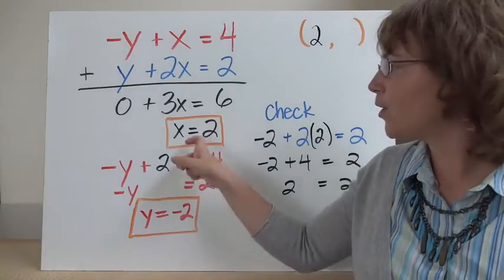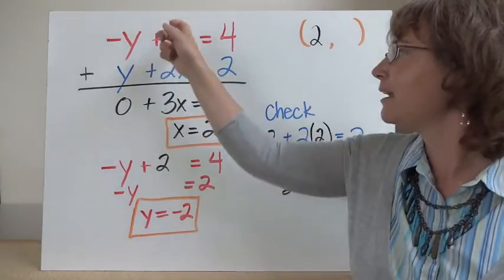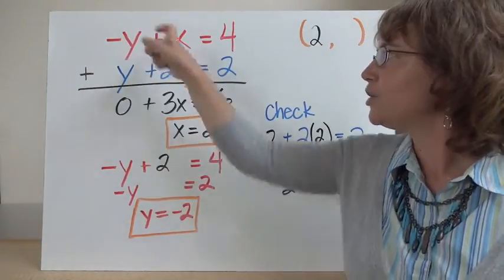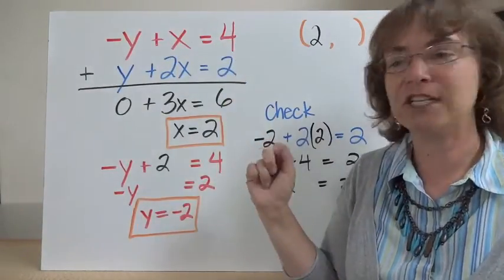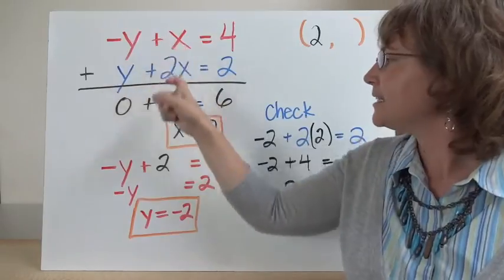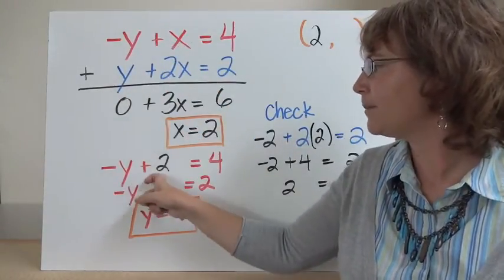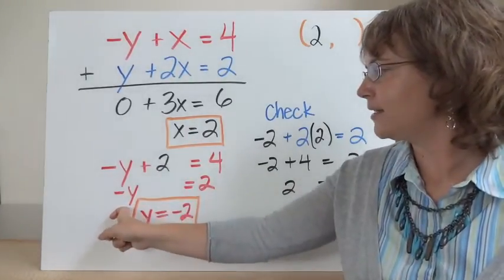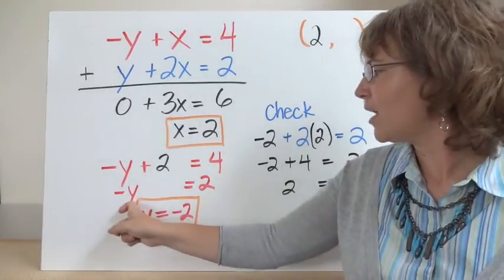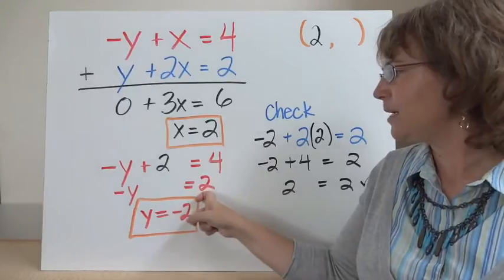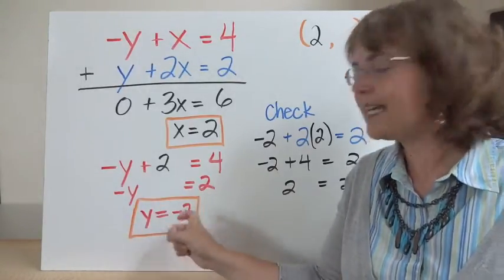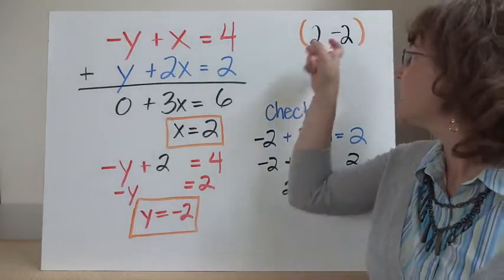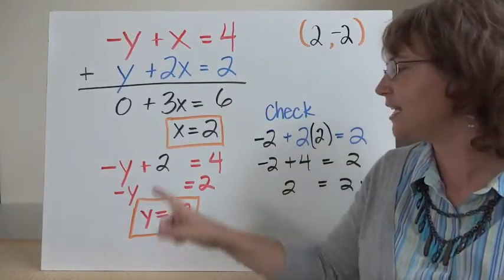Now I need to find my y coordinate. I could go back and try to eliminate my x's, or I could just use substitution. I'm going to use substitution and choose the first equation. So negative y plus x — and instead of x, I put in 2. So negative y plus 2 equals 4. Now I'm going to solve for y by subtracting 2 from both sides. I have negative y equals 4 minus 2, which gives me 2. So negative y equals 2, or y is equal to negative 2.